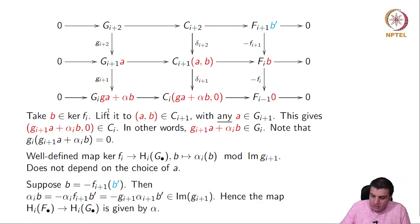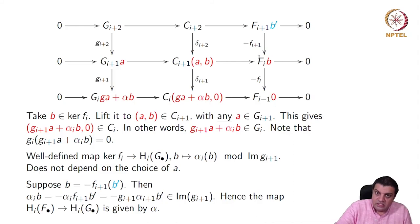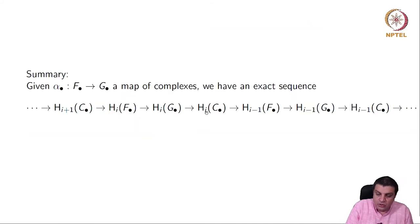Summarizing: given alpha, a map of complexes, we have a long exact sequence: H_{i+1}(C) to H_i(f) to H_i(g) to H_i(C), and so on. The map from H_i(f) to H_i(g) is the one we just constructed, and the other maps come from the maps of complexes in the short exact sequence.